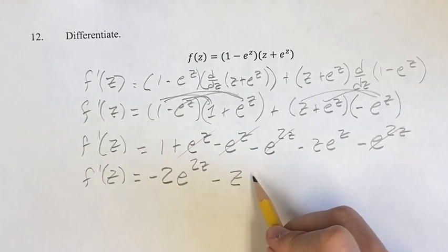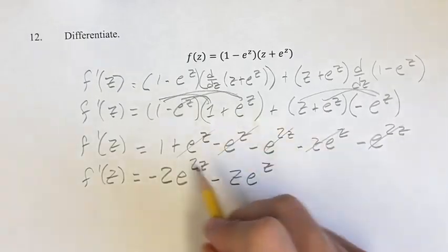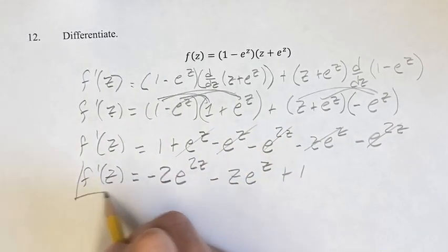And we have minus z e to the z plus 1. And that is going to be your derivative.